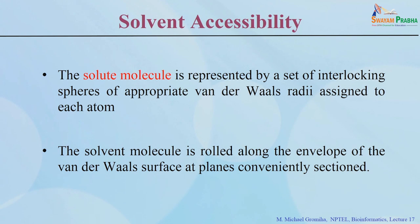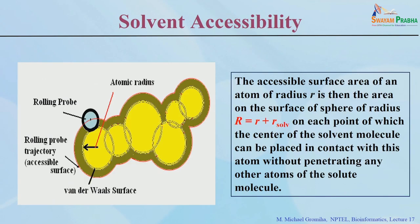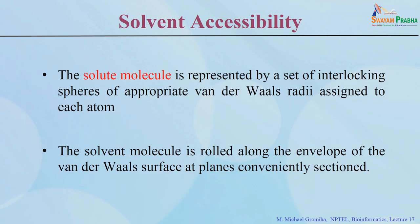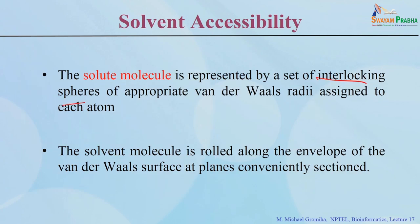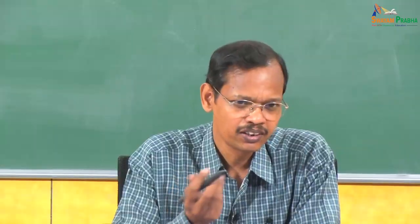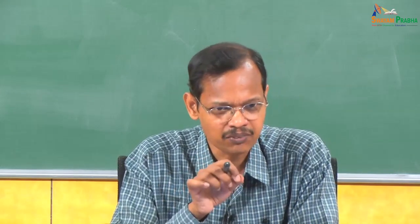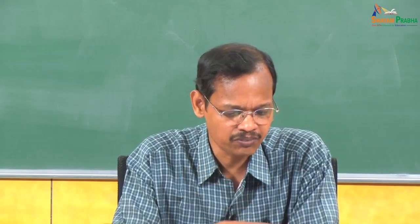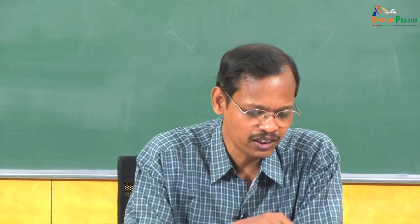The protein is the solute molecule, represented as interlocking spheres. We assign different van der Waals radii to each atom type present in a protein: carbon, oxygen, nitrogen, and sulfur. Each atom has a different van der Waals radius, so these interlocking spheres have different sizes based on the atom type.